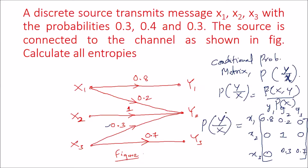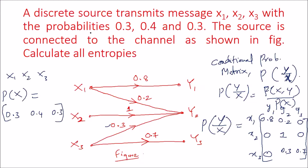From the given data, we have the probabilities corresponding to x1, x2, and x3. This is represented as P(X), which equals probability of x1, probability of x2, and probability of x3, which are 0.3, 0.4, and 0.3. So we have the probability matrix P(X) and the conditional probability matrix P(Y|X).